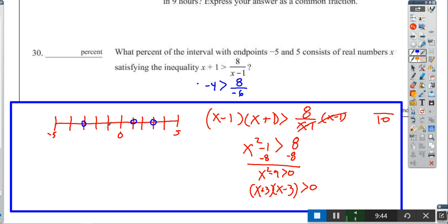Let's plug in -1. If I plug in -1, I get 0 is greater than 8 over -2. Is this a true statement? Yes, because 0 is greater than -4. So that means all the numbers between these two boundary lines will work.